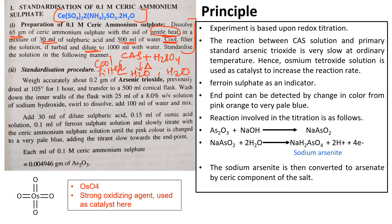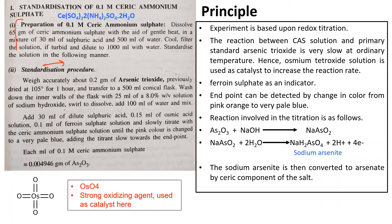Standardization means checking whether the prepared 0.1 molar ceric ammonium sulfate is really 0.1 molar, by using a primary standard — here, arsenic trioxide. The stated amount of arsenic trioxide is to be taken; it should not contain water, so dry it in a hot air oven before use. Wash down the inner walls of the flask with 25 ml of sodium hydroxide solution.